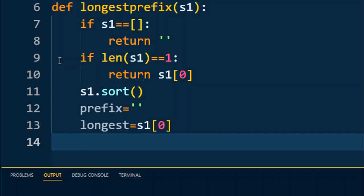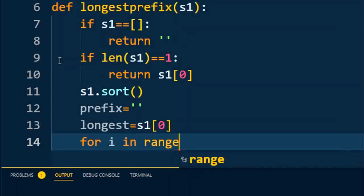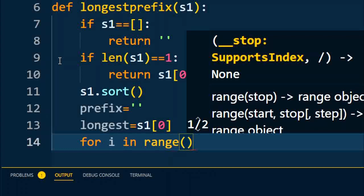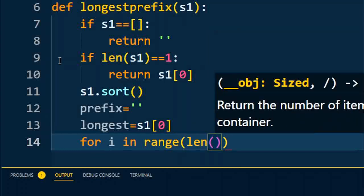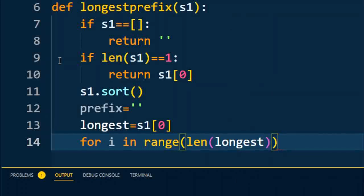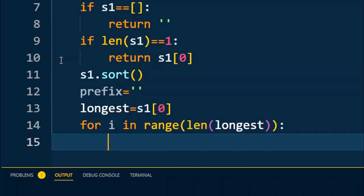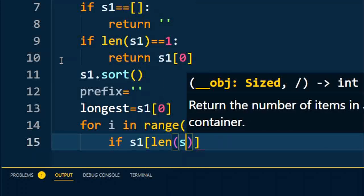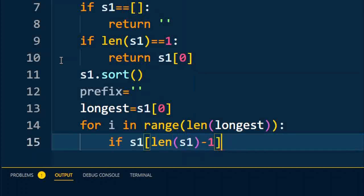So s1[0] is my longest prefix, that is the starting point. After that I'll iterate for i in range of the length of longest string. Inside the loop I'll compare every string with the longest string. So I'm going to write if s1[len(s1)-1][i] == longest[i].